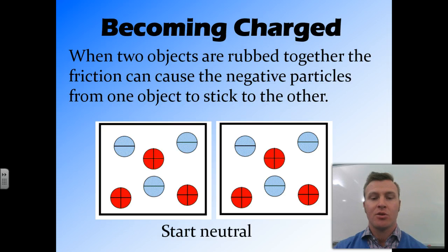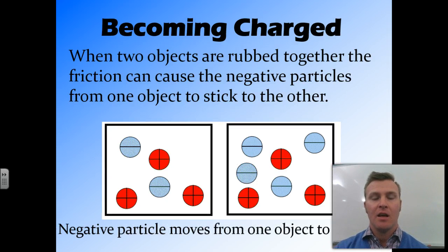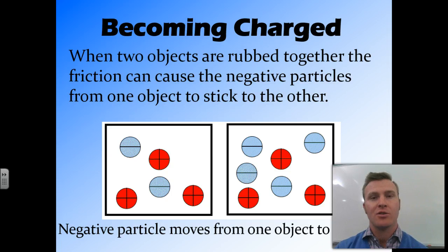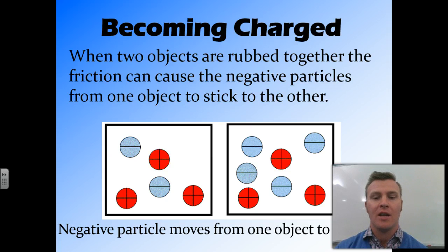In this example, we start with two neutral objects — each has three positively charged particles and three negatively charged particles. After rubbing them together, a negative particle from the left hand side object jumps to the right hand side. This leaves the left object with three positives and two negatives, making it positively charged, while the right object now has three positives and four negatives, giving it an overall negative charge. These two objects are now charged and will attract each other.